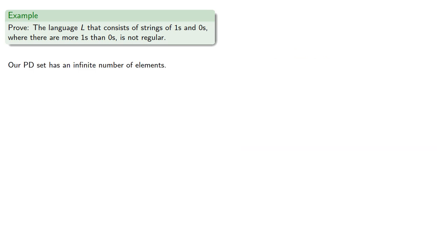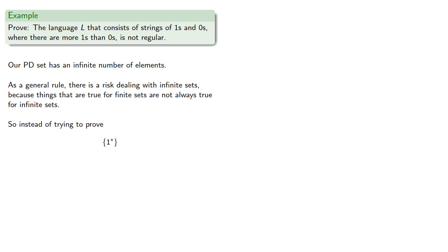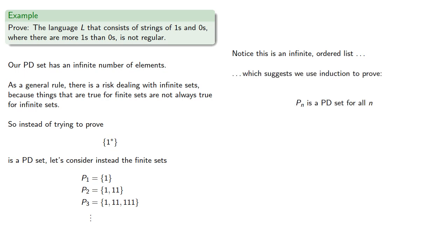As described, our pairwise distinguishable set has an infinite number of elements. As a general rule, there's a risk in dealing with infinite sets, because things that are true for finite sets are not always true for infinite sets. So instead of trying to prove this infinite set is pairwise distinguishable directly, let's consider the finite sets P1 (just the string with one 1), P2 (strings with one or two 1s), P3 (strings with up to three 1s), and so on, where Pn consists of all strings with up to n 1s. This infinite ordered list suggests we use induction to prove that Pn is a pairwise distinguishable set for all n.